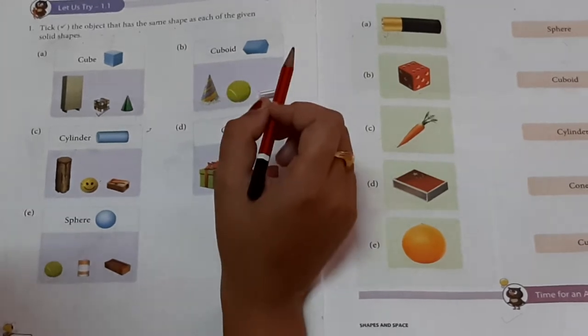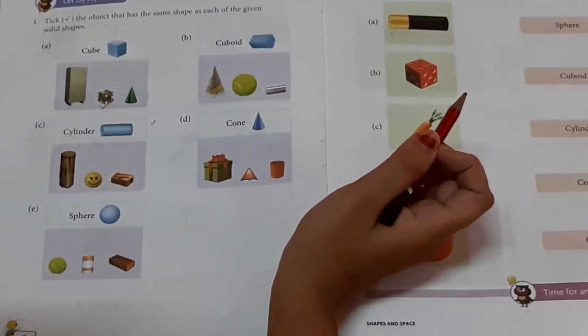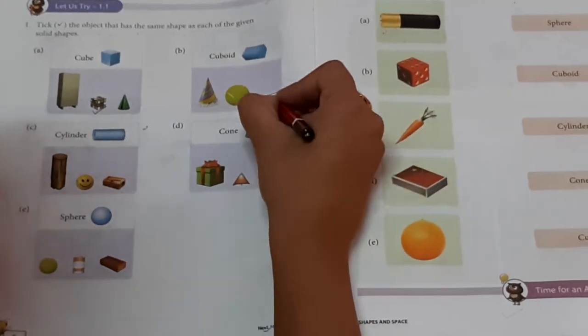Next, cuboid. Identify the cuboid, children. Yes, you guessed it right. It is cuboid.